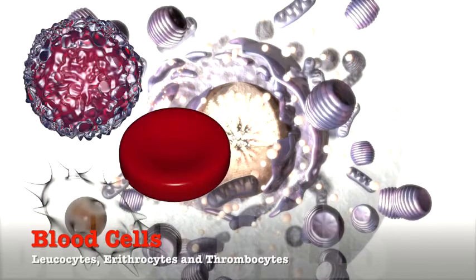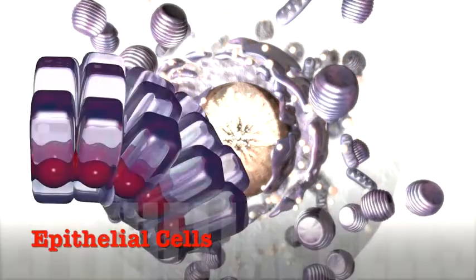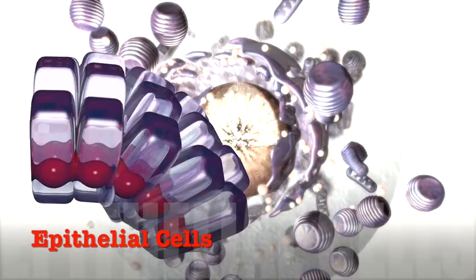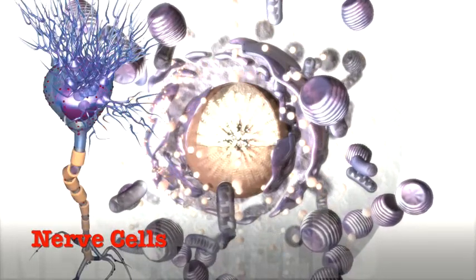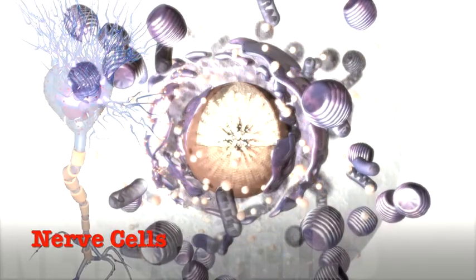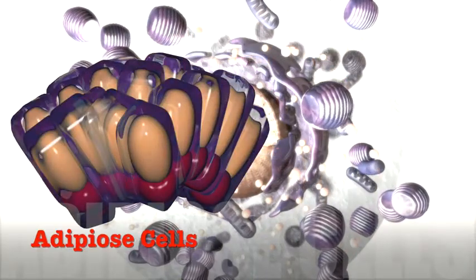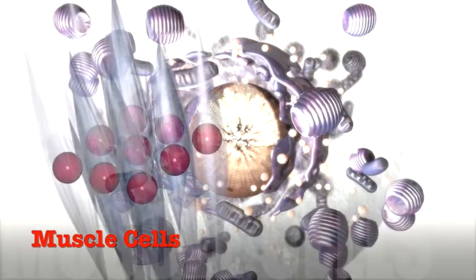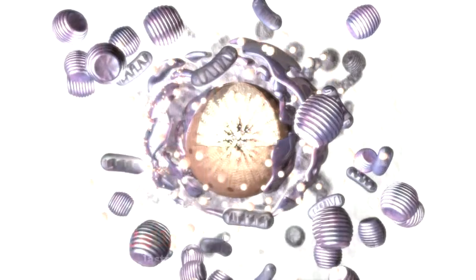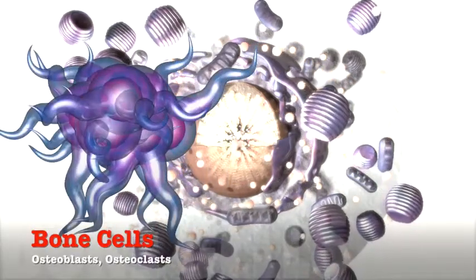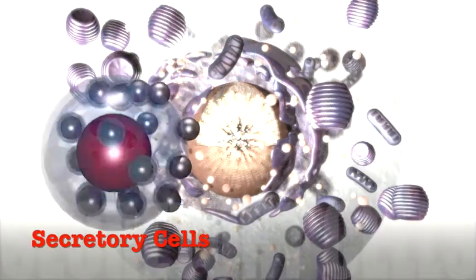Leukocytes, erythrocytes, and thrombocytes are blood cells. Epithelial cells are simple cells which cover organs. Nerve cells form the nervous system. Adipose cells store fat. Muscle cells, or myocytes, are responsible for movement. Bone cells form and dissolve bone. Secretory cells form glands.